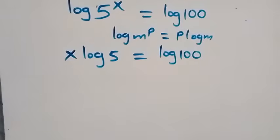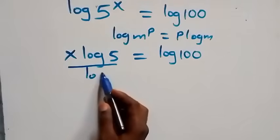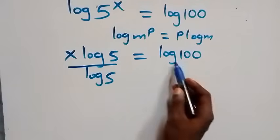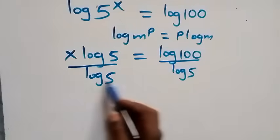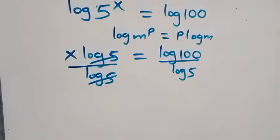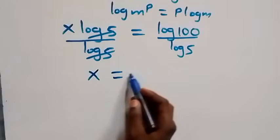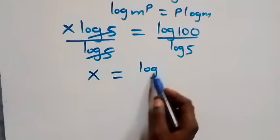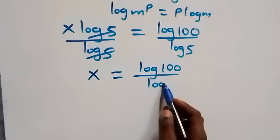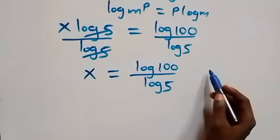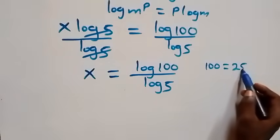Our next step here, we divide both sides by log 5 — that is, divide here by log 5 and also divide this side by log 5 — which implies log 5 cancels, and we are left with x equals to log 100 over log 5.